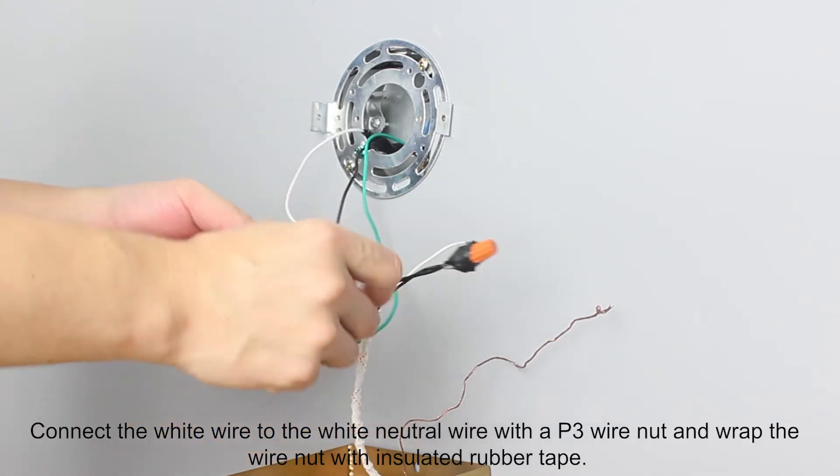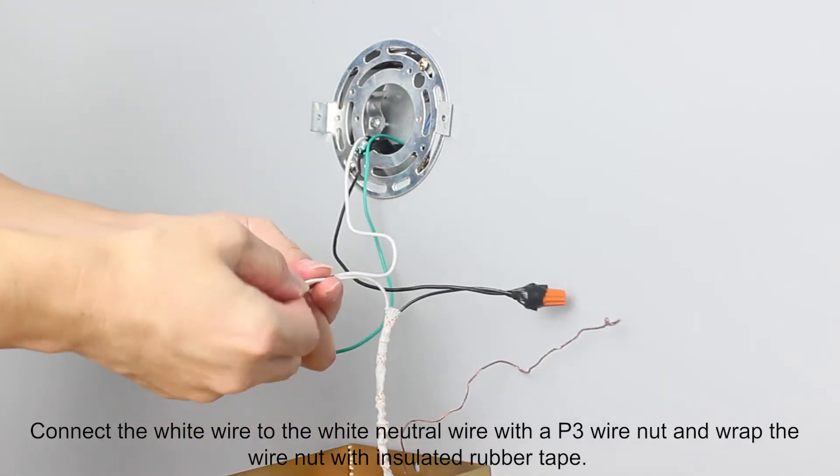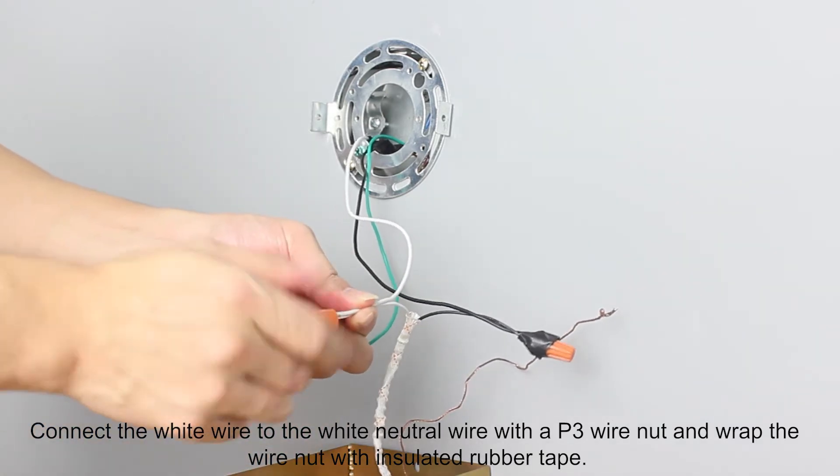Connect the white wire to the white neutral wire with a P3 wire nut and wrap the wire nut with insulated rubber tape.